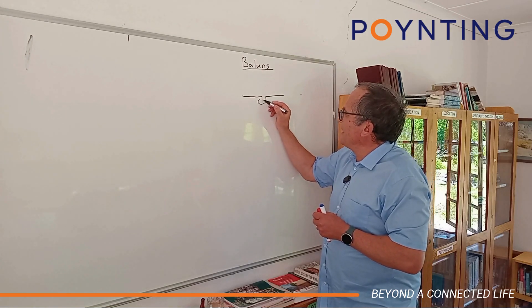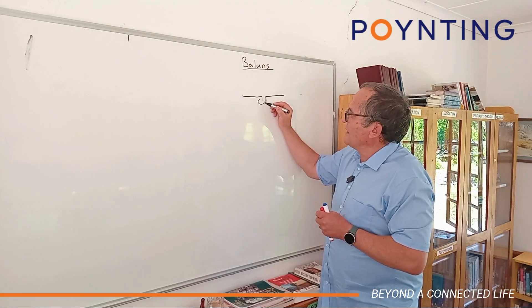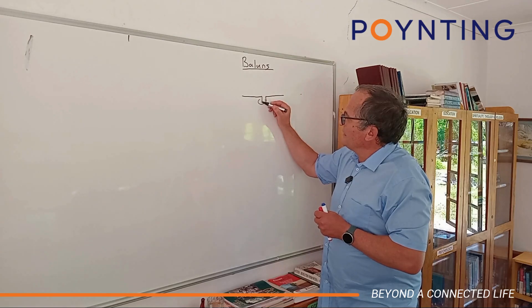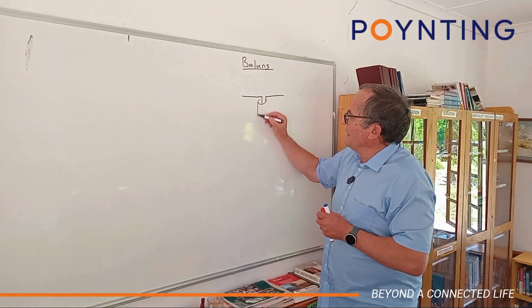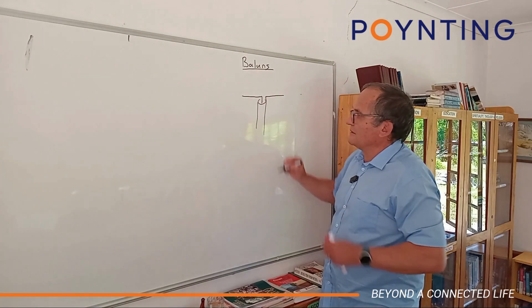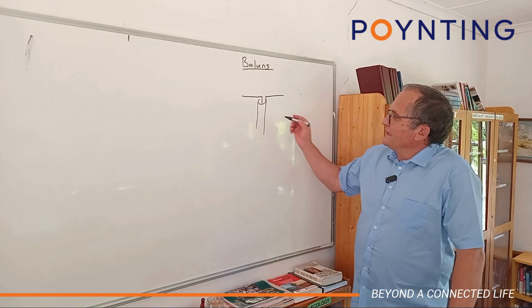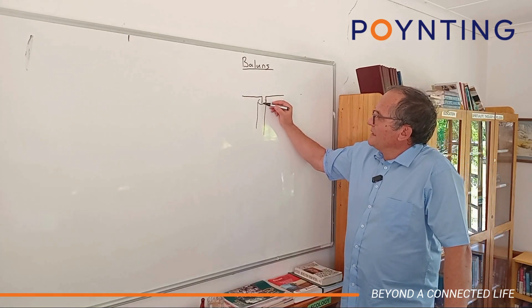...is you've got a coaxial cable and its outer you connect to this one side, then it's got an inner cable that goes in the middle of the coax, and the rest of the coax goes down.